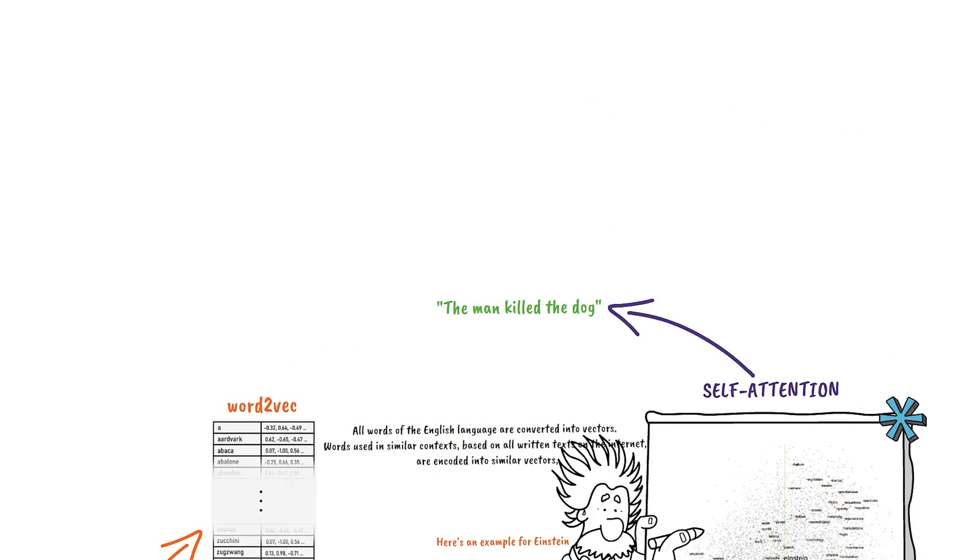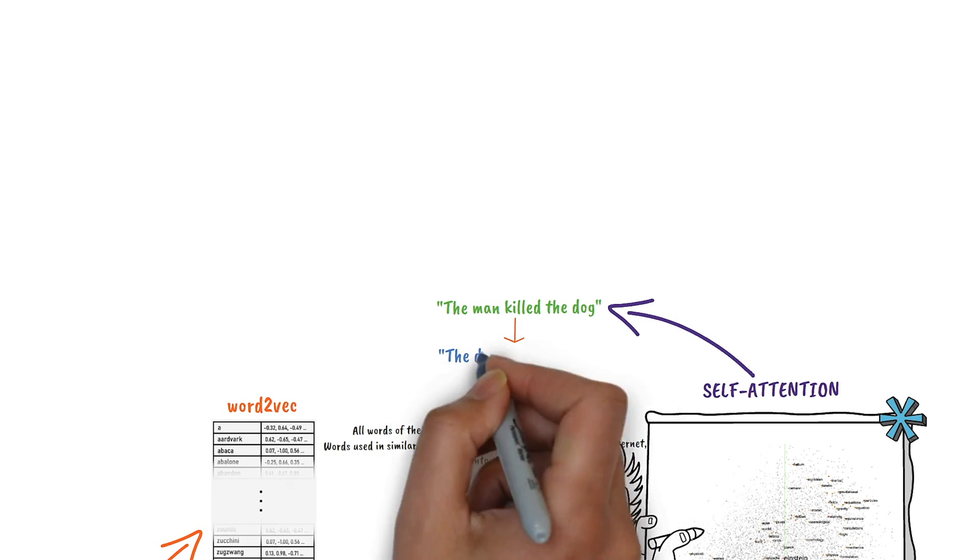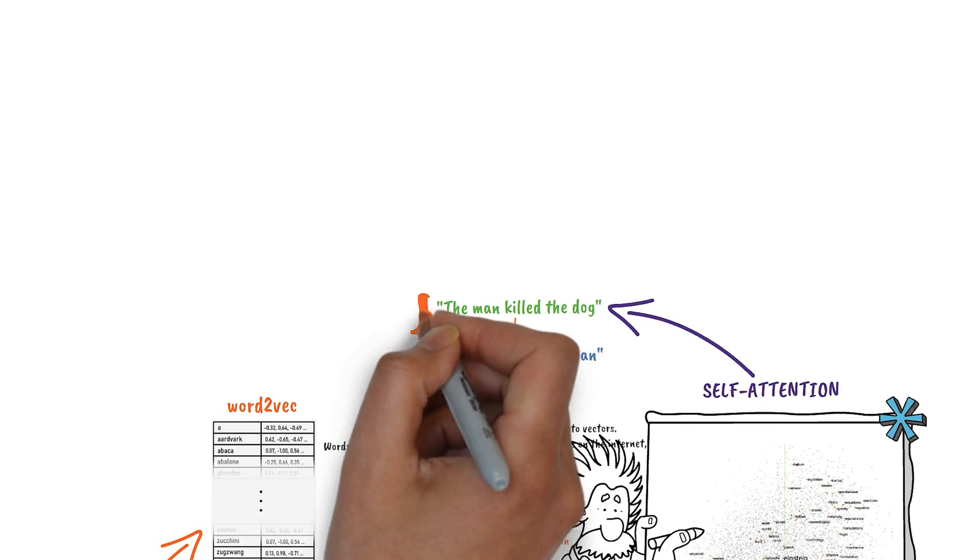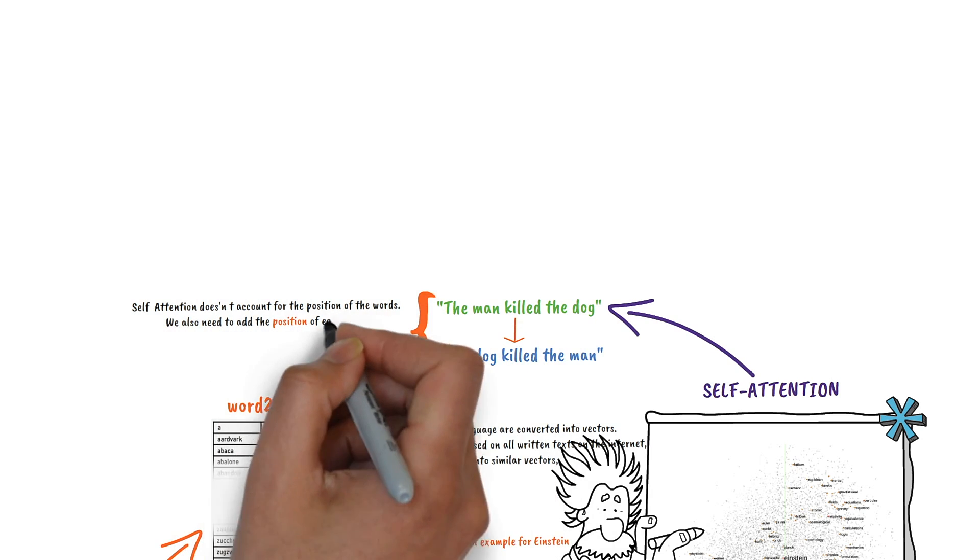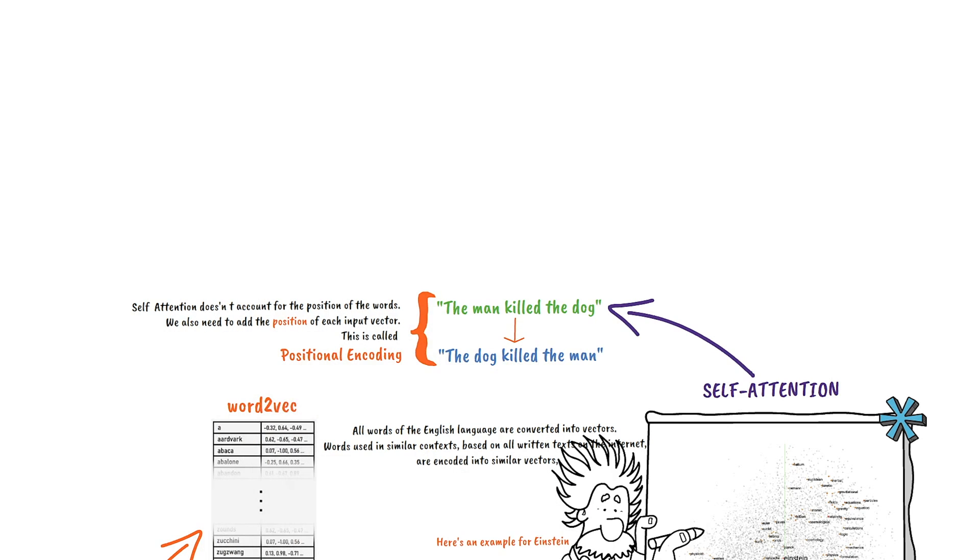And here we have our self-attention layer. But there's an issue. Look at the phrase, the man killed the dog. It has the same vector as the dog killed the man. So we also need to encode the position of the words. That's called positional encoding.